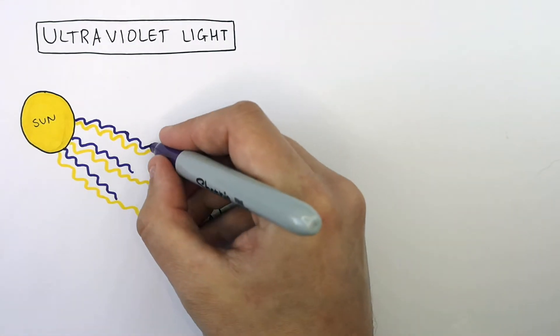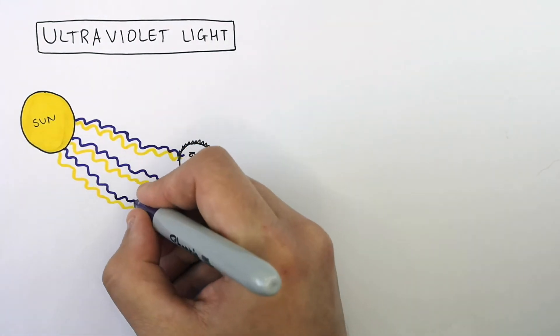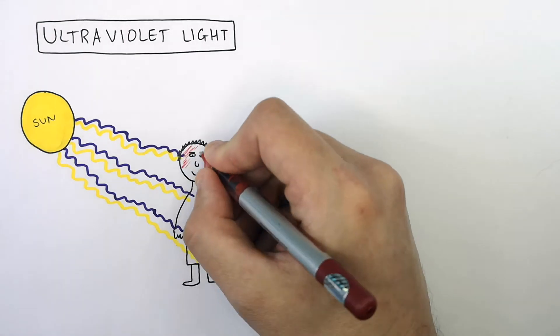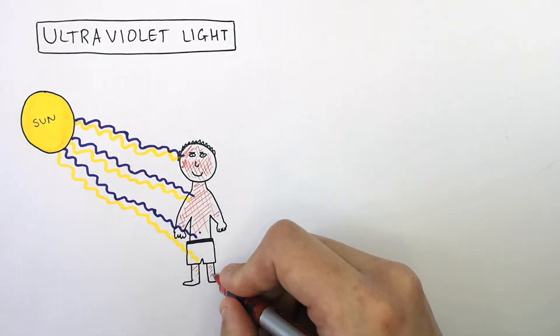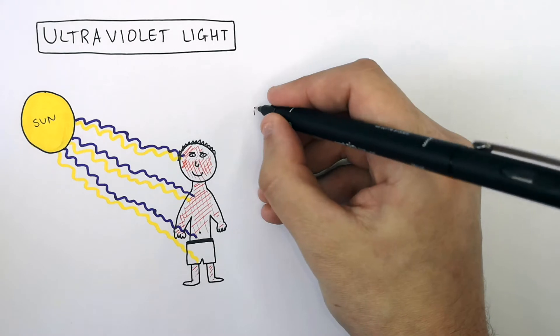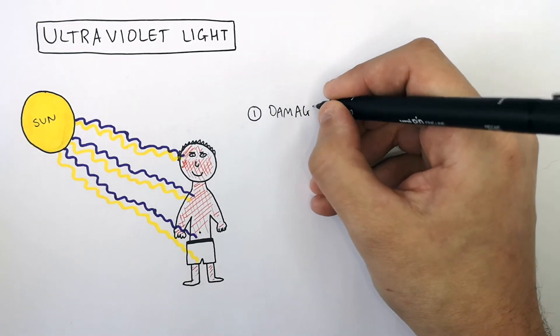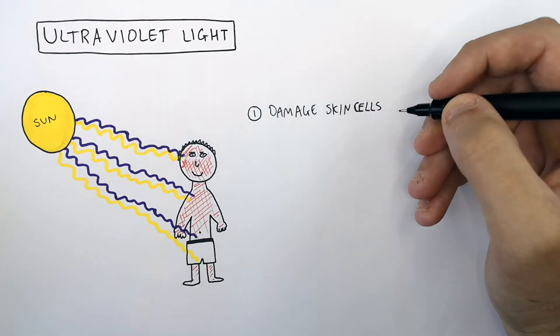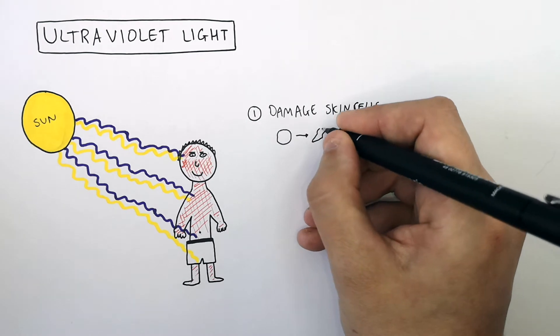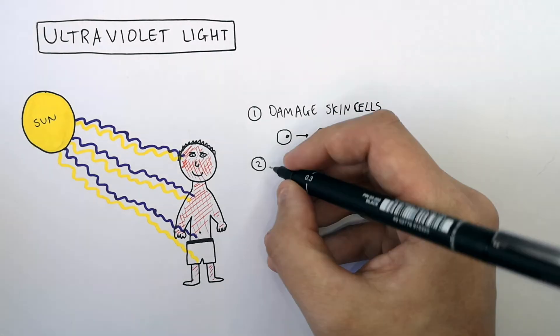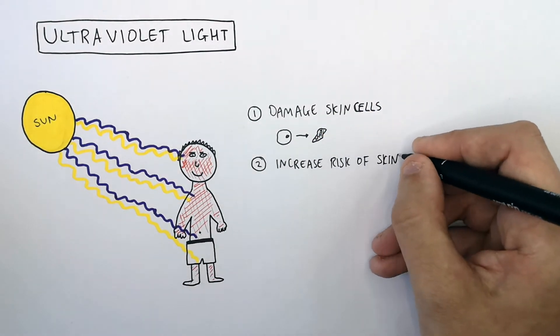So when you're out in the sun and you get all red, that's because the UV radiation from the sun is causing your skin cells to become damaged. UV radiation can cause damage to skin cells. This increases the risk of skin cancer.